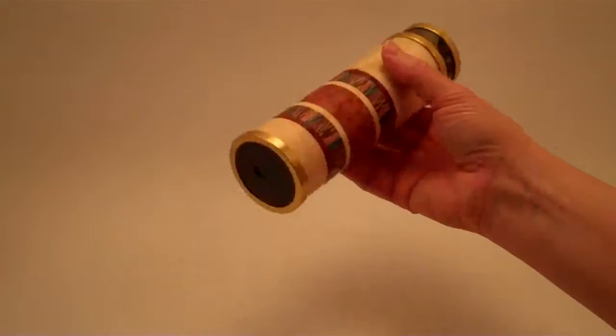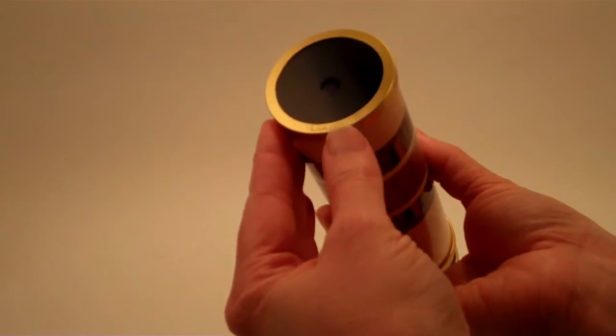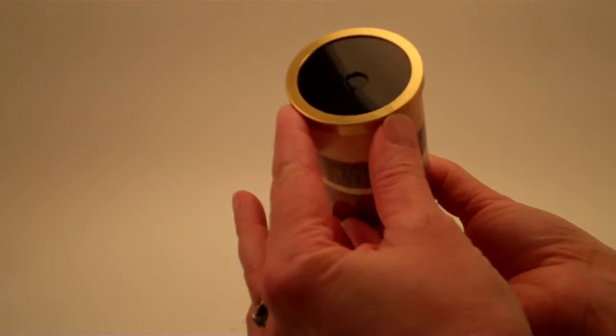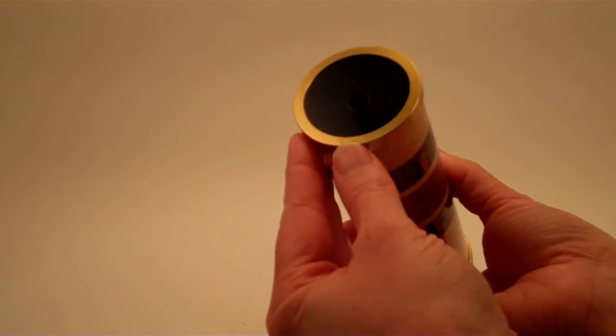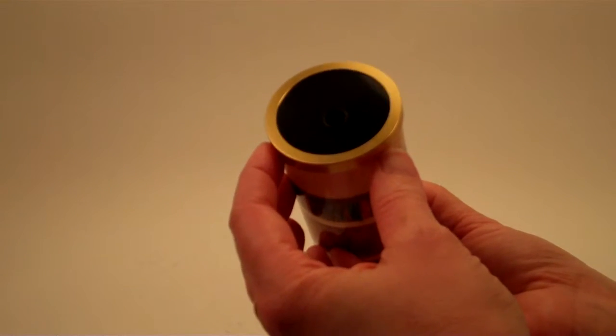This kaleidoscope, we know the provenance very well because Luke and Sally have etched directly into the metal ring by the eyepiece. Durrett 98, this kaleidoscope is from 1998.